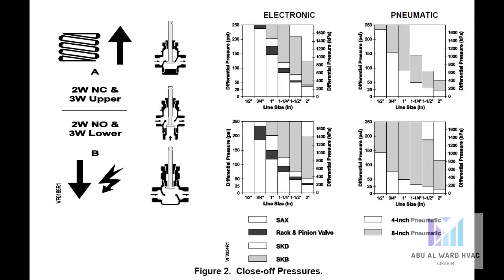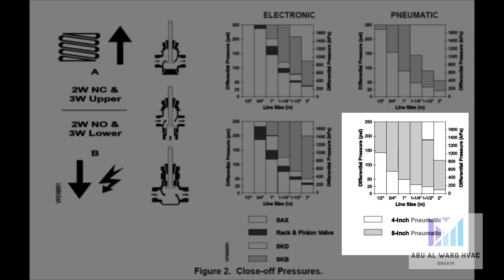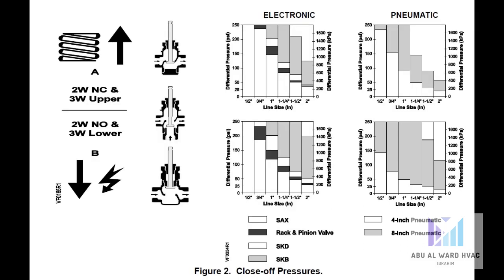Next, we go to the actuator selection. According to the graph for pneumatic actuators for normally open valves, we locate the one-inch valve in the lower right side of the figure. The gray shaded bar represents an 8-inch pneumatic actuator. In this case, the 8-inch pneumatic actuator has sufficient force to provide tight close-off against more than 50 PSI differential pressure.